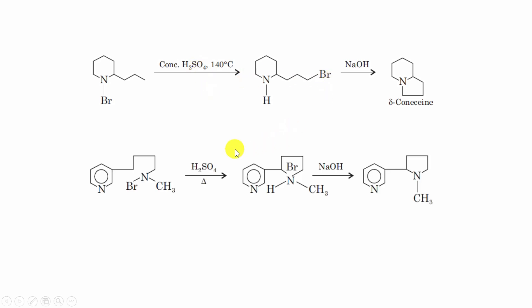Another important example is this: this N-halogenated alkyl derivative on treating with concentrated sulfuric acid followed by treating with base—see, this pyrrolidine derivative is formed by this reaction.